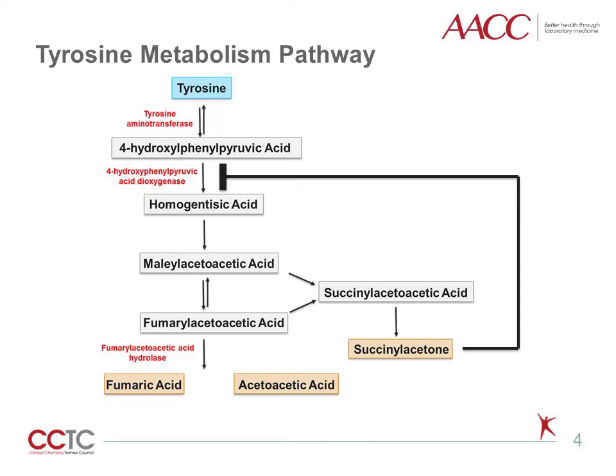In the subsequent pathway, tyrosine undergoes a transamination reaction catalyzed by tyrosine aminotransferase to produce 4-hydroxyphenylpyruvic acid. This allows the copper-containing enzyme, 4-hydroxyphenylpyruvic acid dioxygenase, to convert 4-hydroxyphenylpyruvic acid to homogentisic acid via an oxidative decarboxylation-hydroxylation irreversible reaction. Cleavage of a benzene ring on homogentisic acid produces maleylacetoacetic acid, which undergoes isomerization to form fumarylacetoacetic acid.